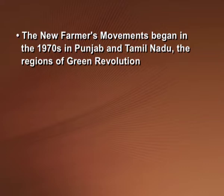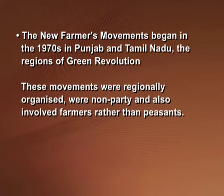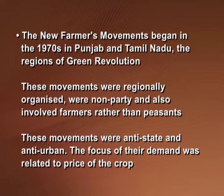The central concern for peasants was land, but the nature of issues changed after India gained independence. After independence, important issues included land reforms, zamindari abolition, declining importance of land revenue, and public credit systems. New farmers' movements began in the 1970s in Punjab and Tamil Nadu — regions of the Green Revolution. These movements were regionally organized, non-party, and also involved farmers rather than just peasants. They were anti-state and anti-urban, focusing on crop pricing.